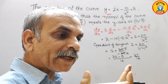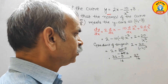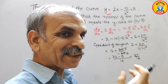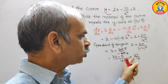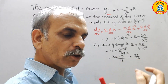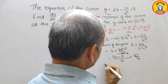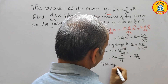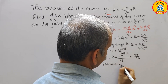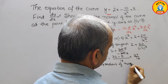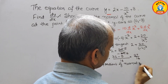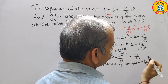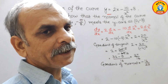But we want the gradient of the normal. So here what we have to do: just change the sign — positive to negative — and reciprocate it. So the gradient of the normal is equal to minus 16 by 27.